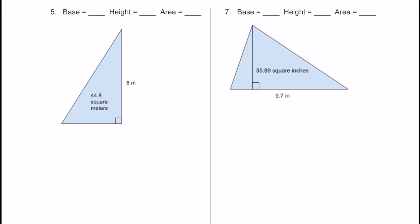Here's number 5. Things are a little different now — we don't know the base, so we need to change our approach. The height is this measurement from top to bottom: 8 meters. We do know the area — it's 44.8 square meters. Let's pick a formula. I'll use area equals base times height divided by 2. Substituting in: 44.8 meters squared equals B times 8 meters, all over 2.